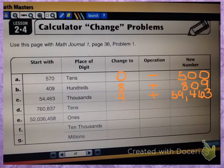Let's take a look at letter D. We have 760,837. We're going to change the tens place to a 0. How would we do that? Subtract. How much would we subtract? If you thought 30, you were correct. So our new number would be 760,807.